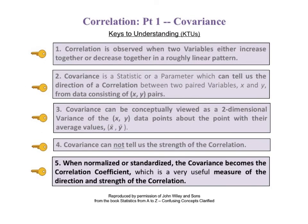The fifth and final key to understanding says when normalized or standardized, the covariance becomes the correlation coefficient, which is a very useful measure of the direction and strength of the correlation.